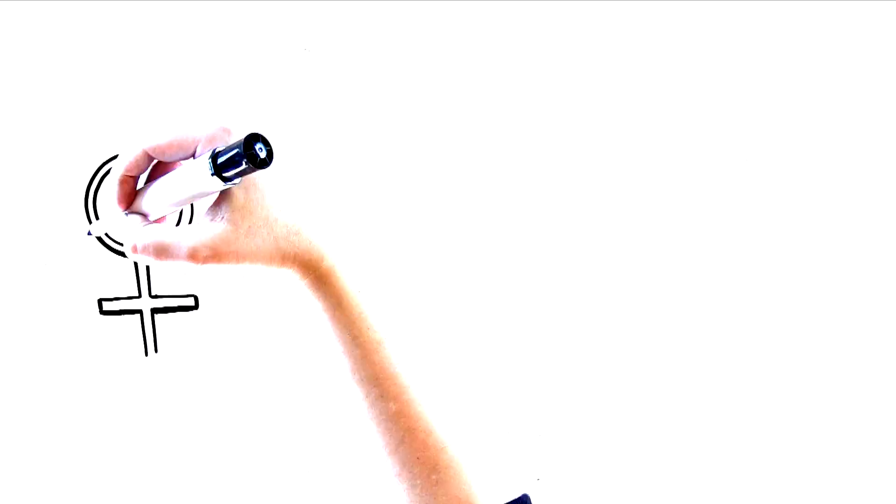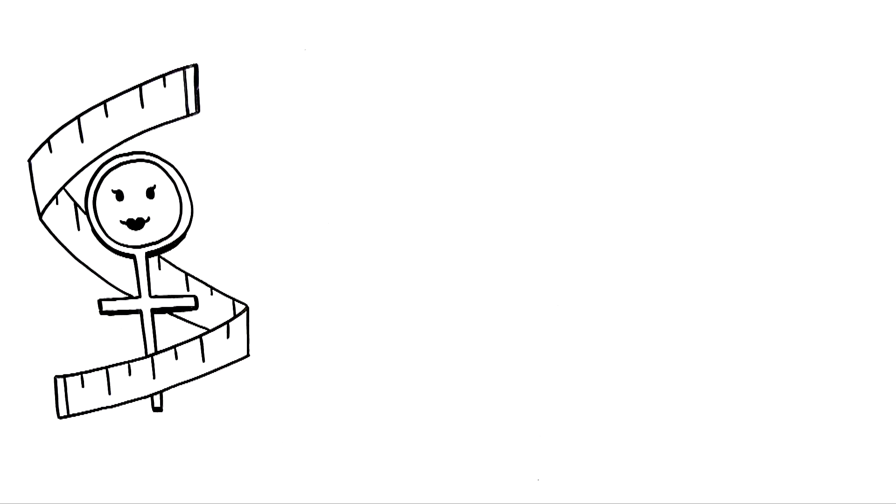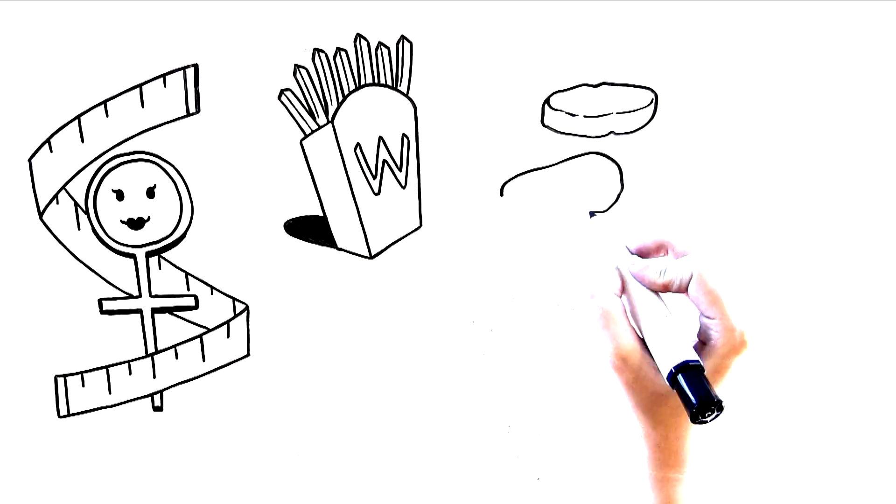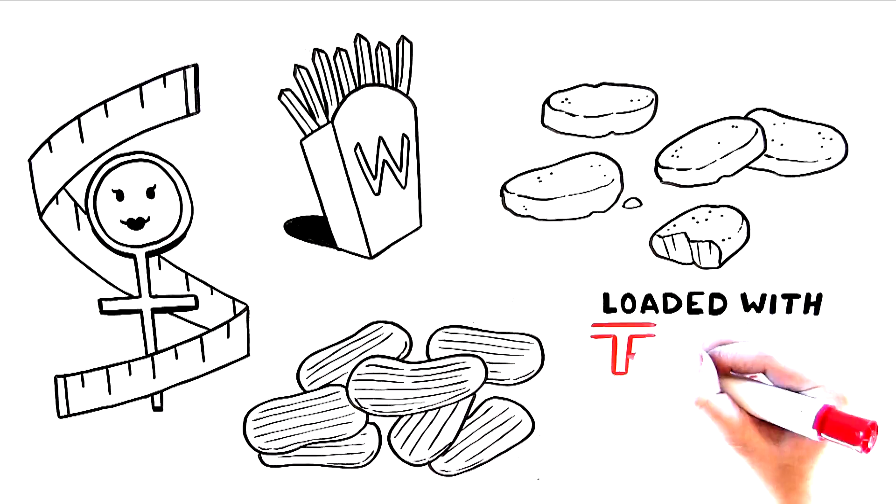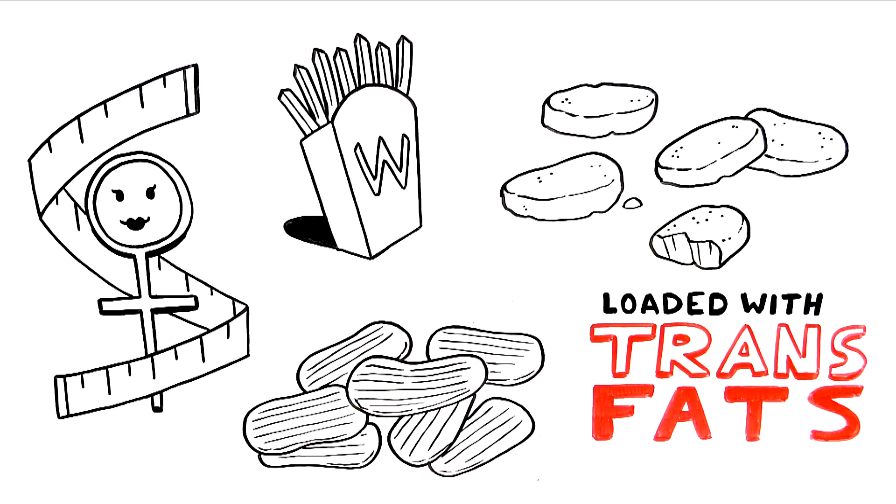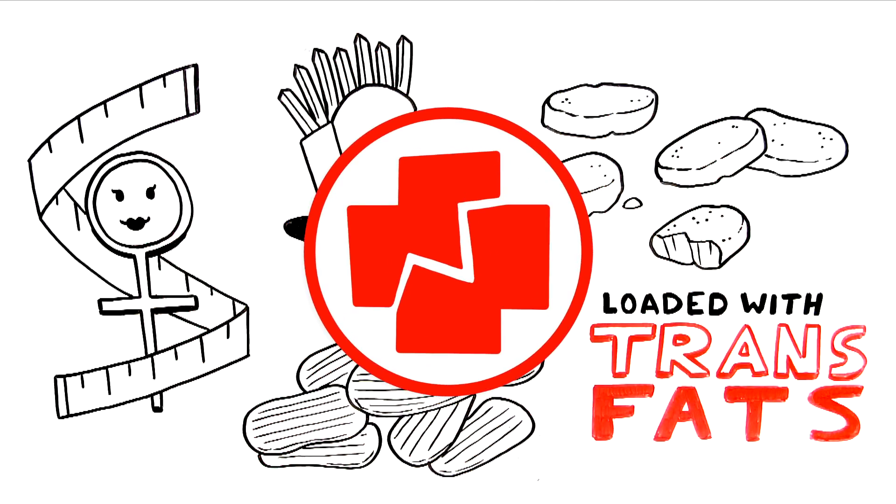First up is one of the worst foods of all for any woman wanting a slimmer waistline: fried foods. This includes French fries, chicken tenders, potato chips, just to name a few. These foods are loaded with trans fats, which kill your sensitivity to leptin, not to mention can lead to a slew of negative health consequences associated with trans fat consumption.